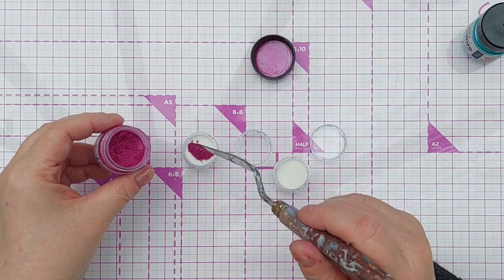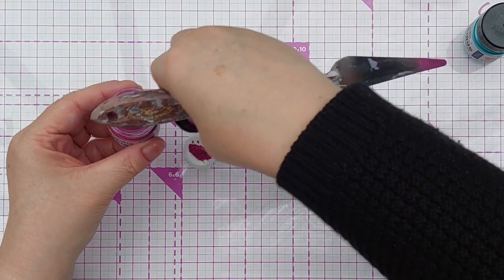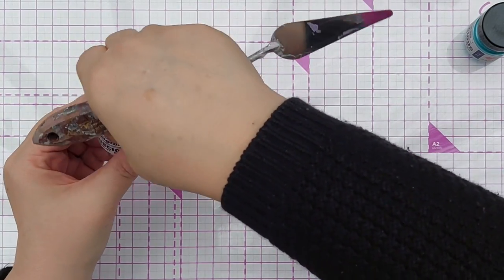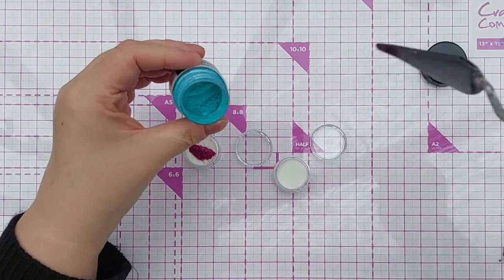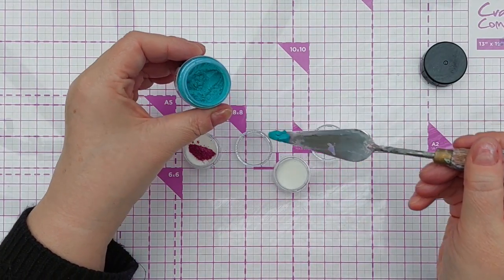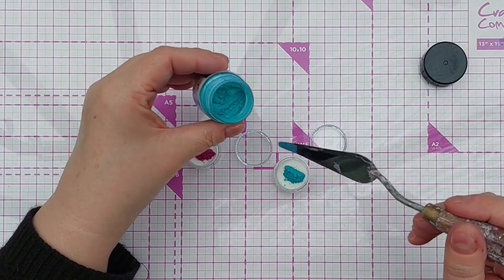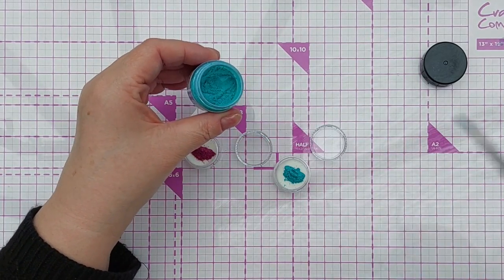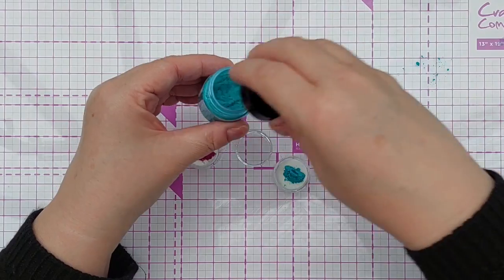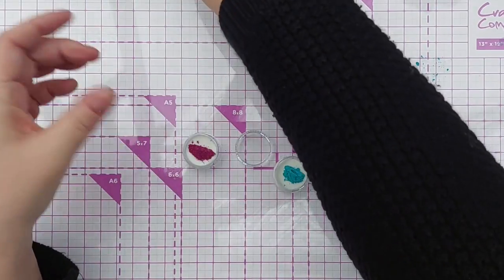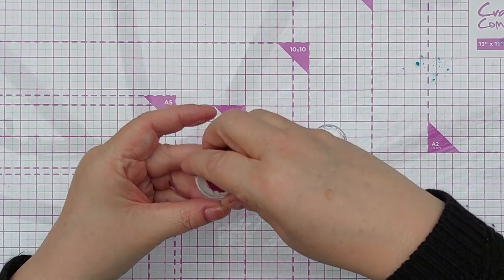You'll have to experiment with the ratio of pigment powder to clear embossing powder with whatever pigment powders you've got. The idea is that the pigment in these powders will color and mix in with the clear embossing powder and give you a colored embossing powder.